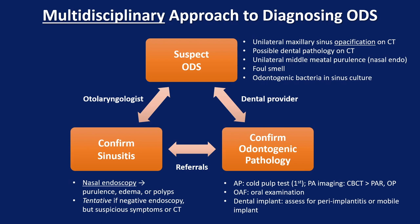One of the most important take-home points with regard to imaging for odontogenic sinusitis is that routine bite-wing dental x-rays are absolutely not acceptable in the diagnostic workup of this condition. They do not capture the periapical regions of dentition and therefore should not be considered when evaluating these patients. Other common odontogenic causes include orantral fistula as well as dental implants.